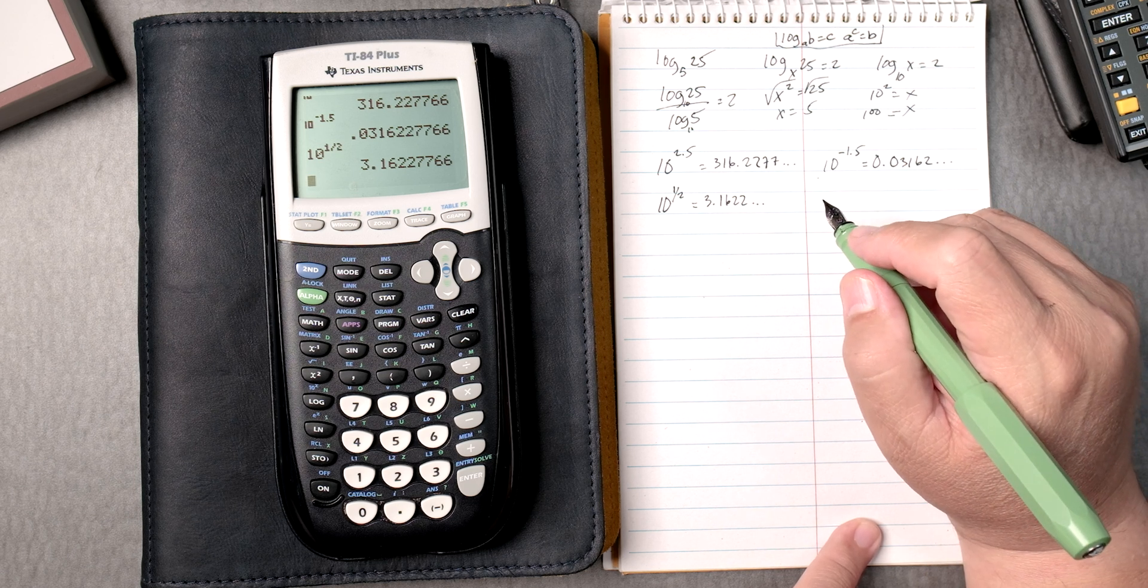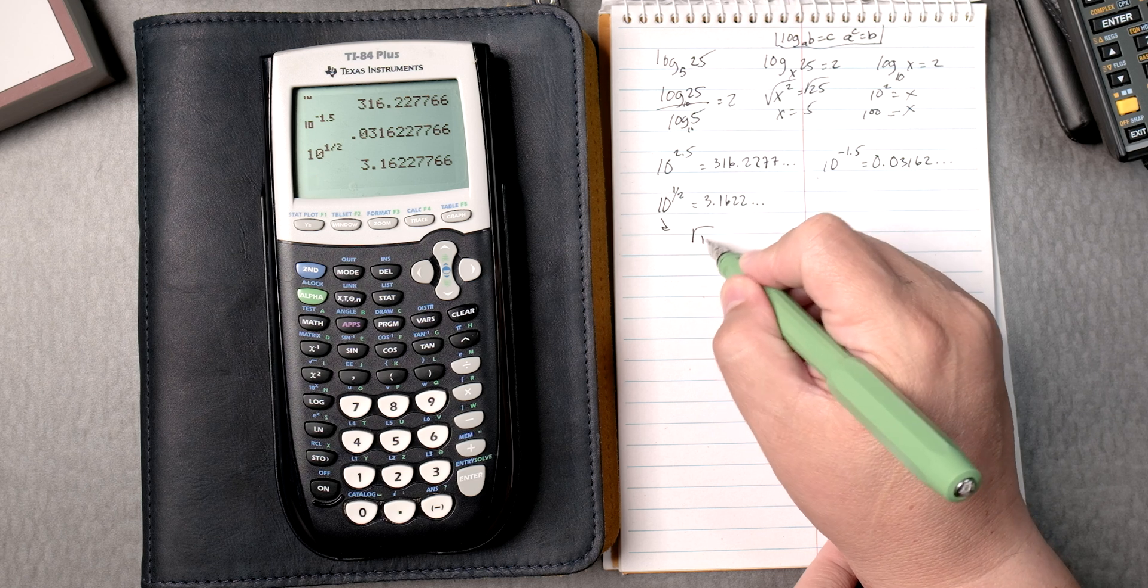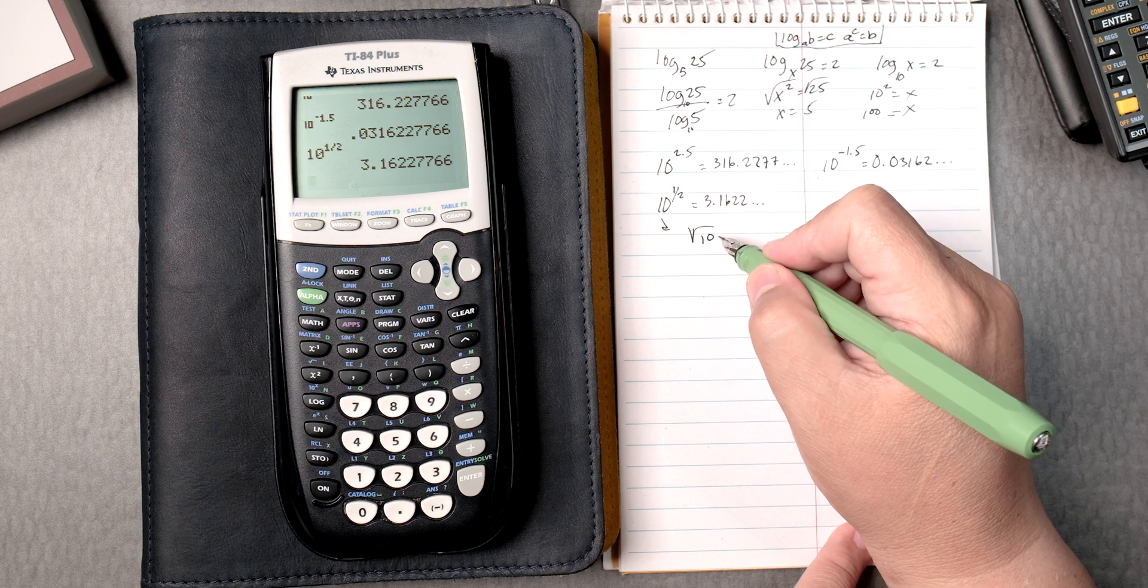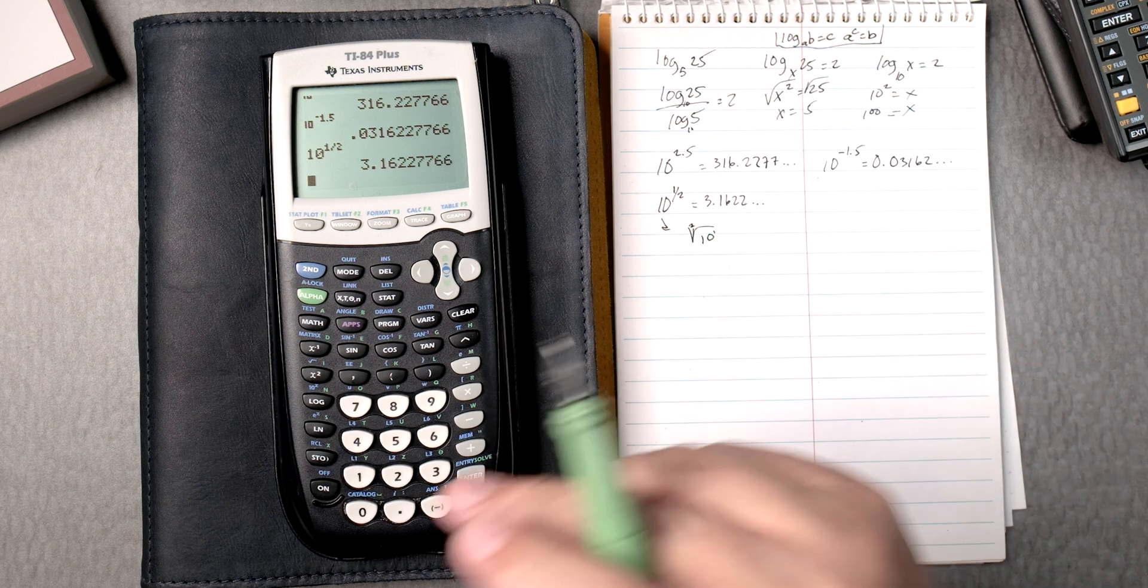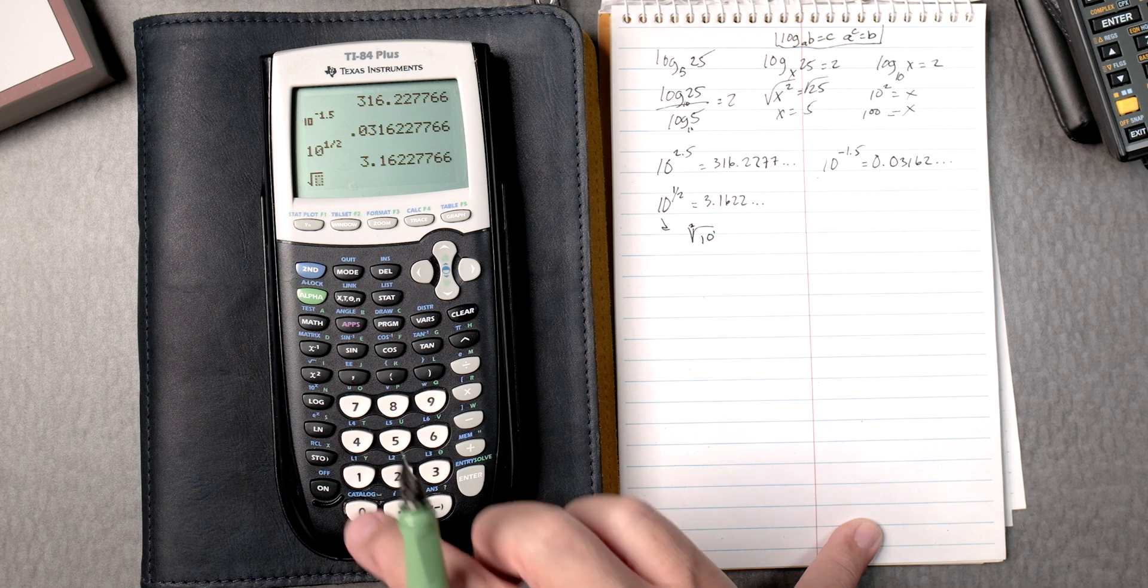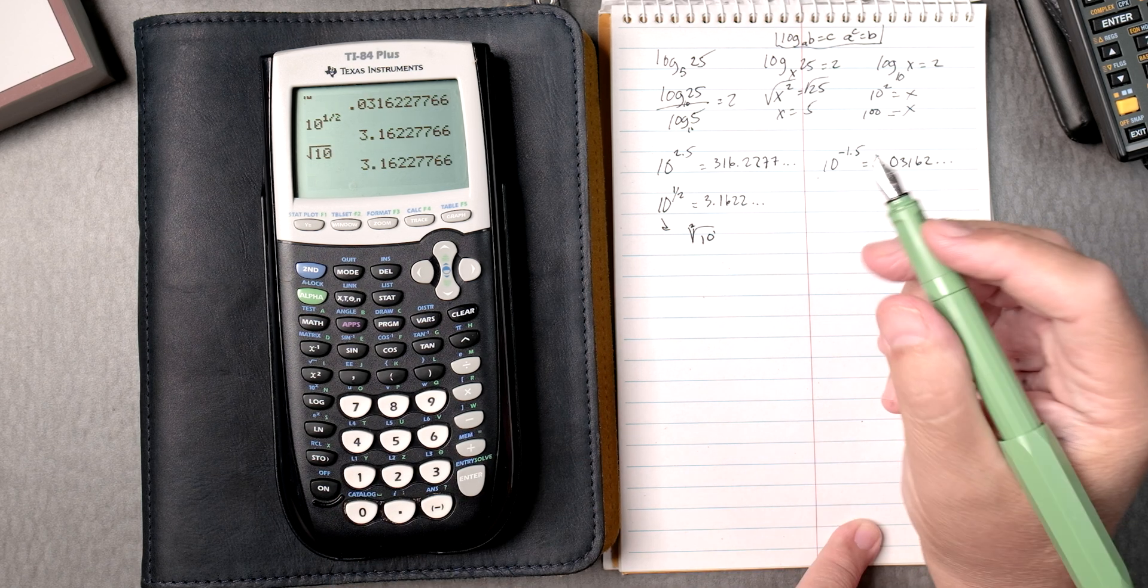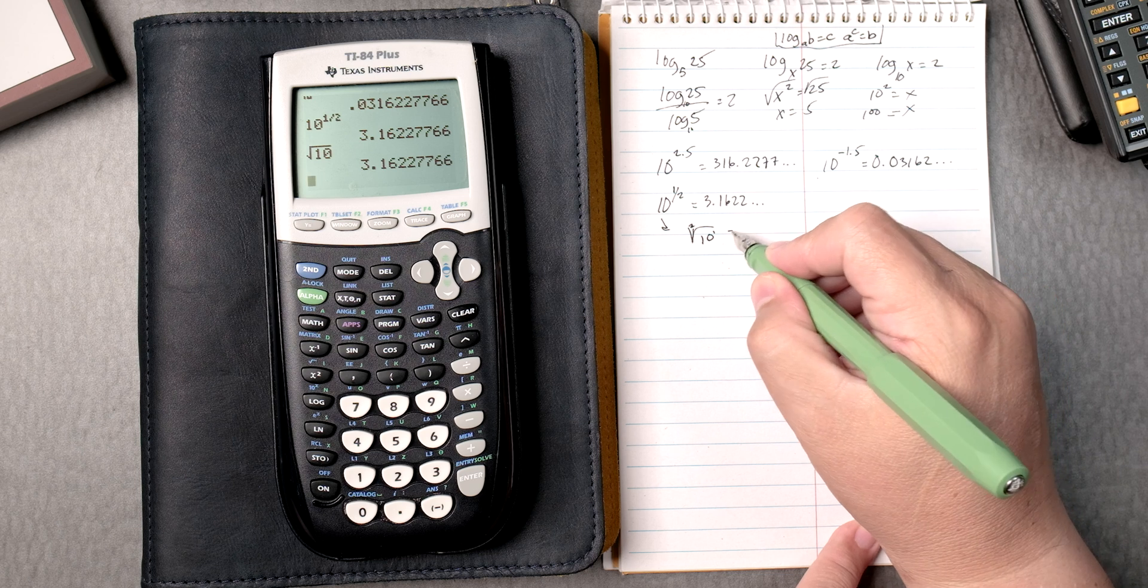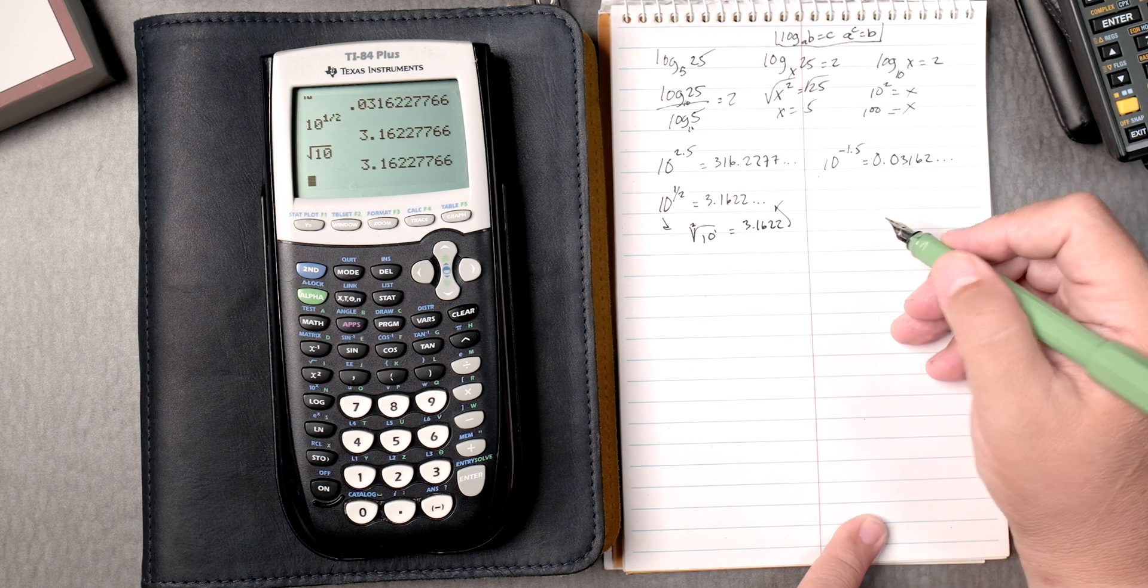All right, so this right here really is the square root of 10, and when you have a square root, the base is 2. This 2 is here, that one is there. So really, you go 2nd, x squared gives you the square root, you press 10, you enter, and what do you get? Well, you get 3.1622, same answer.